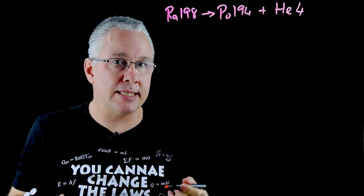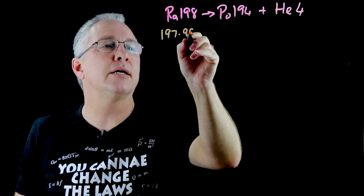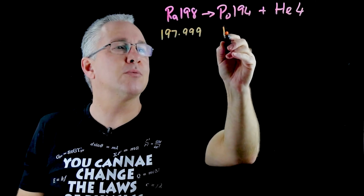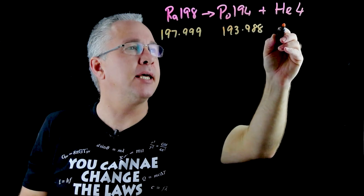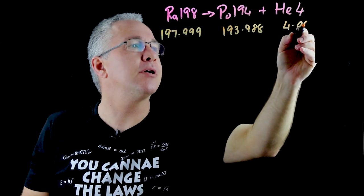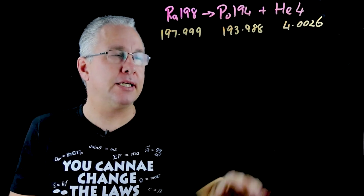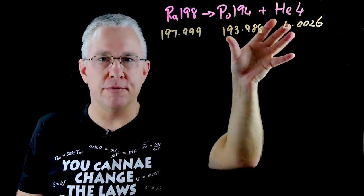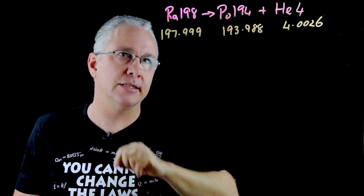What we also need is their mass in atomic mass units. Radium is 197.999. Polonium is 193.988 and the helium is 4.0026. Now if you look very carefully you'll see that the sum of the products is less than the total of the reactant of radium.